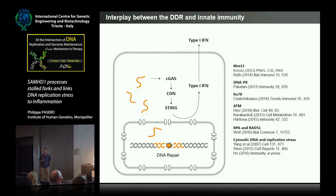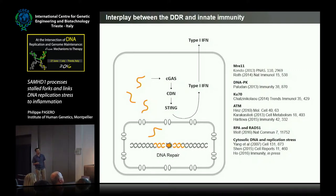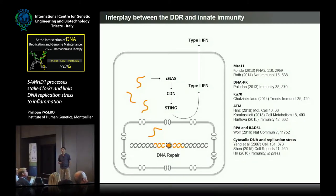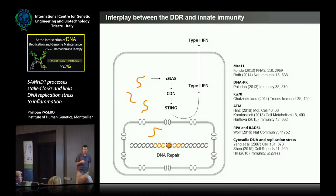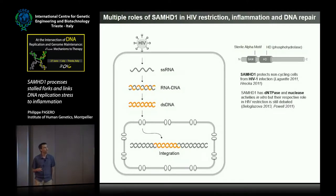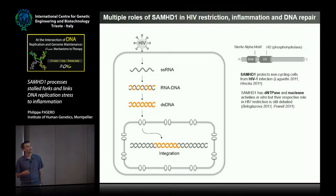If you look at the factors involved in the sensing of DNA species in the cytosol, you find all these very familiar factors, including RPA and RAD51, which were shown very recently to be involved in the sequestration of these DNA fragments into the nucleus. So today I'm going to tell you about a protein called SAMHD1 that is encoded by the human genome, expressed in most cells, and was first characterized as a factor involved in protection against HIV virus infection.